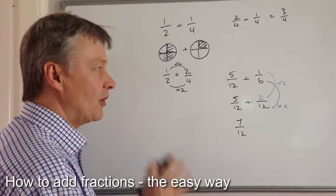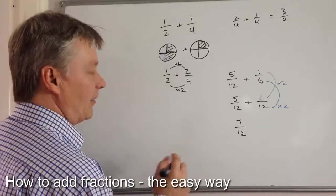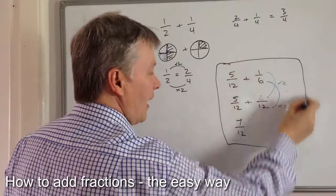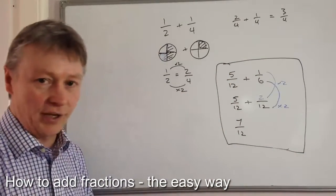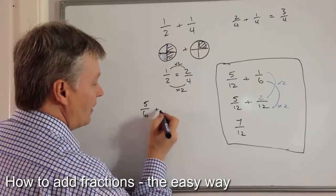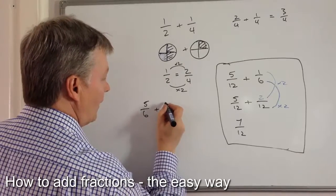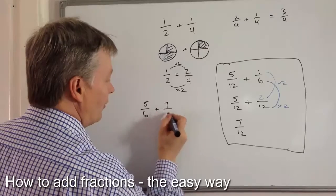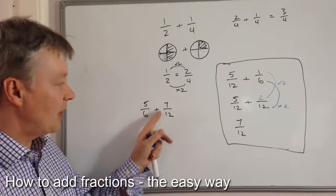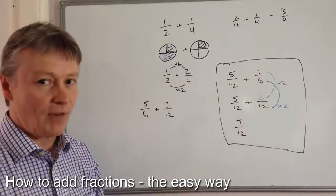I just want to touch on one slightly different element of this. I'm going to change the question to be something like five over six added to seven out of twelve. So I've changed it to seven out of twelve and five out of six.